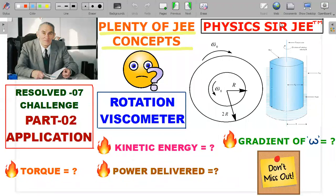So all that explanation was already done. So in case you have missed out on it, the link in the description for the Resolved 7 challenge, the rotation viscometer of Irido book, is presented and please do go through that.